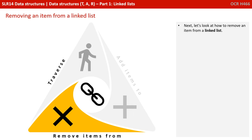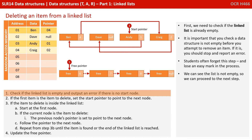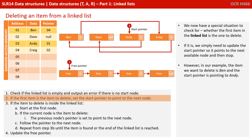Next, let's look at how to remove an item from a linked list. Let's delete Ben from this linked list, which is stored in alphabetical order. First, we need to check if the linked list is already empty. It is important you check a data structure is not empty before you attempt to remove an item — if it is, you should stop and report an error. Students often forget this step and lose an easy mark in the process. We can see the list is not empty, so we can proceed. We now have a special situation to check for: whether the first item in the linked list is the one to be deleted. If it is, we simply need to update the start pointer so it points to the next available node and then stop.